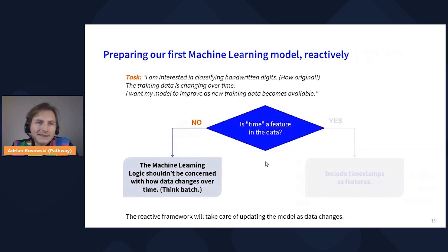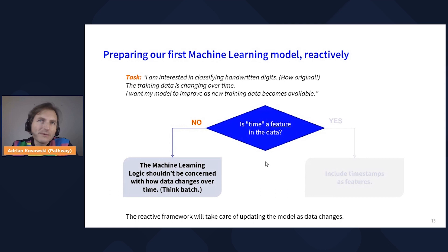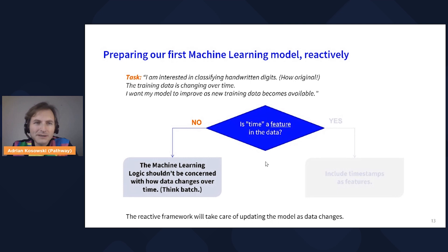Let's start by preparing our first machine learning model reactively. The goal is to show you the proof of concept, so I'll use a simple toy example: classifying handwritten digits. The twist is that the training data coming in is changing over time — we see new digits with labels at every step, new elements of the training set, which forces our model to adapt. Clearly, I want the model to improve as new training data becomes available.